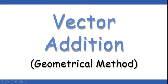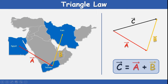Now we will move on to vector addition of two vectors — how two vectors can be added. This is the geometrical method I am describing. The first one is the Triangle Law. I have highlighted three countries: Egypt, Iran, and Yemen. Egypt to Yemen is defined by vector A bar, and Yemen to Iran is shown with vector B bar.